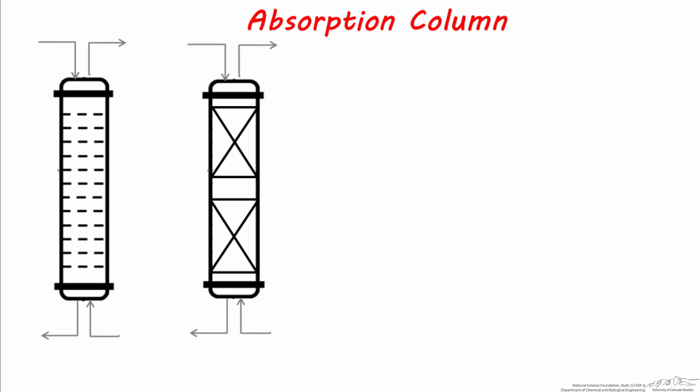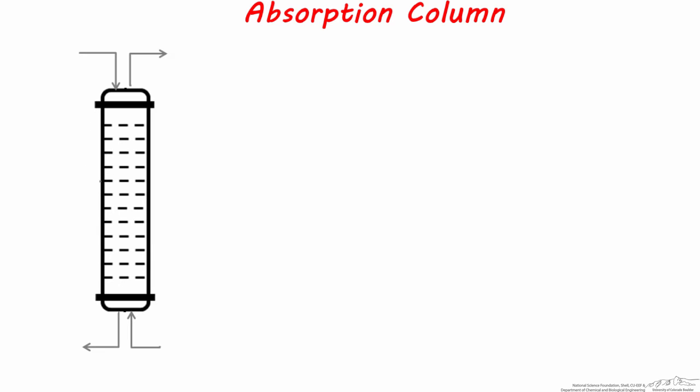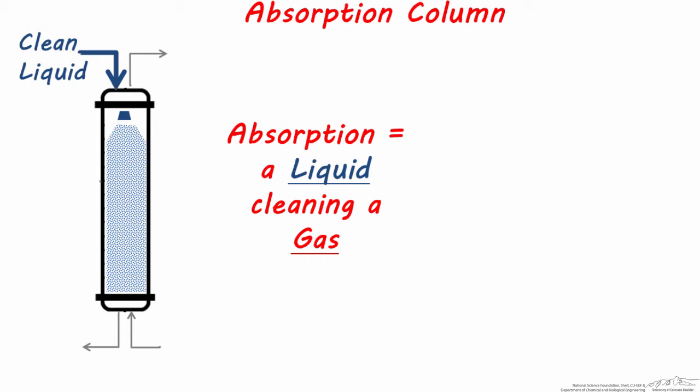Let's next look at absorption separators. These are representations of tray and packed absorption towers. Notice these are slightly different from distillation columns in that they have two streams coming in and going out of the tower. So we can better understand these process units, I'm going to remove the internals from this tray column for clarity.